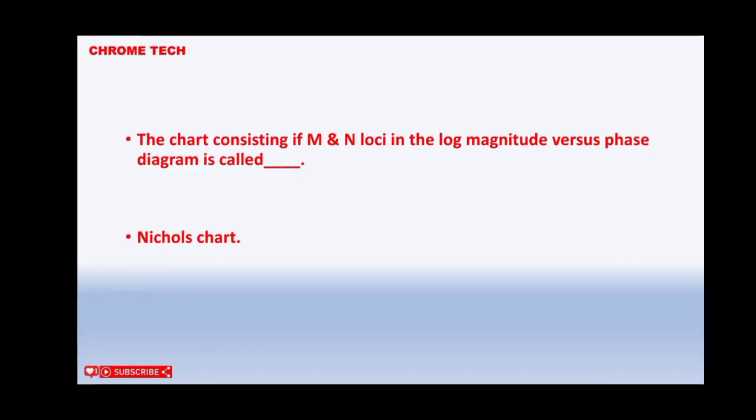The chart considering if M and N loci in the log magnitude versus phase diagram is called. Nyquist plot is the correct answer.